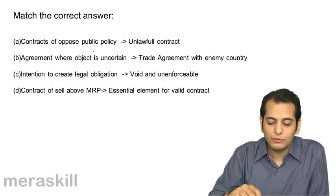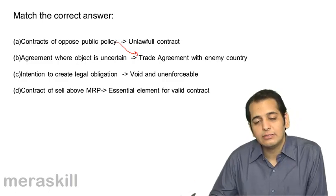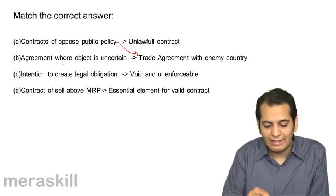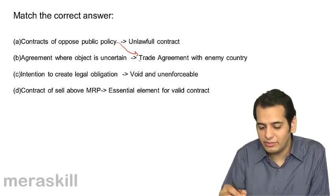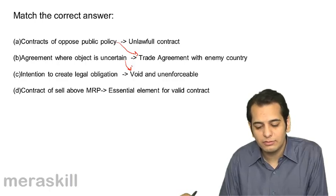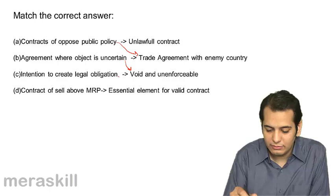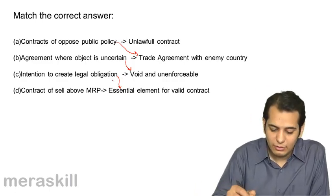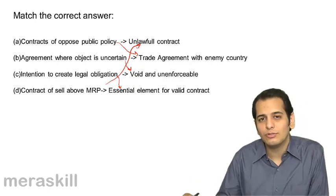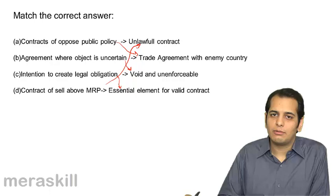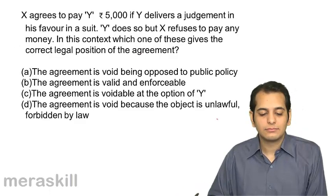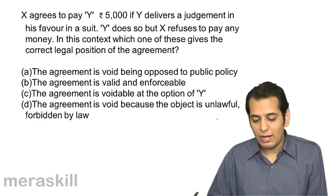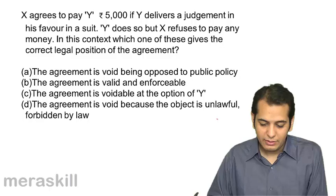Which contracts are opposed to public policy? Contract with alien enemy countries — trading with them is opposed to public policy. Agreement where object is uncertain — such agreements are always void and unenforceable. Intention to create a legal obligation is an essential element of a valid contract. And finally, a contract to sell above MRP will be unlawful. You cannot sell any goods above MRP.